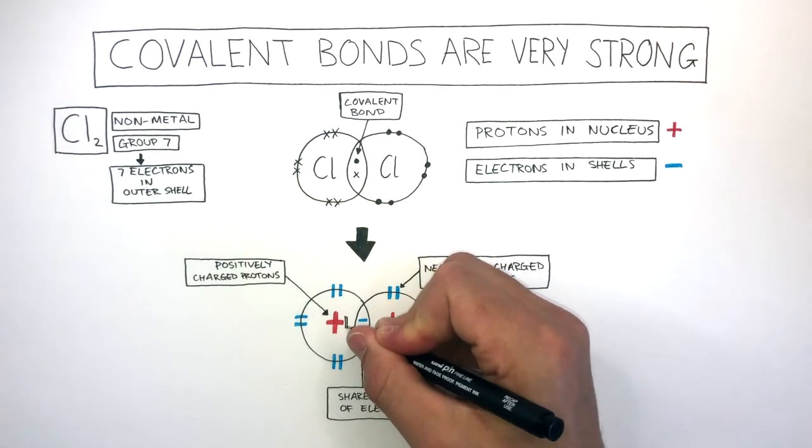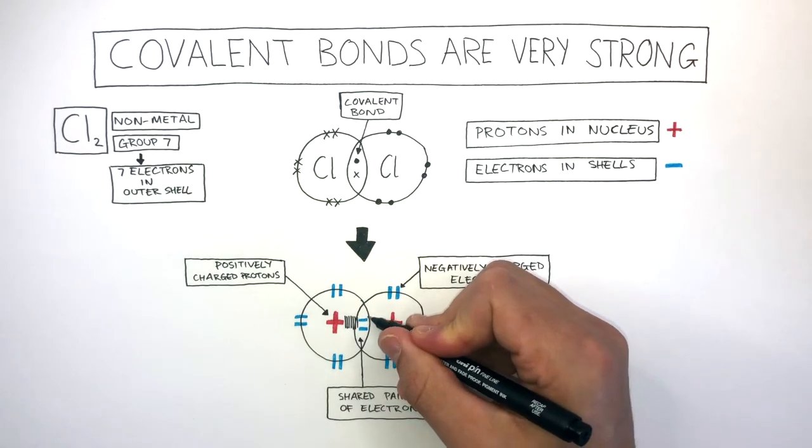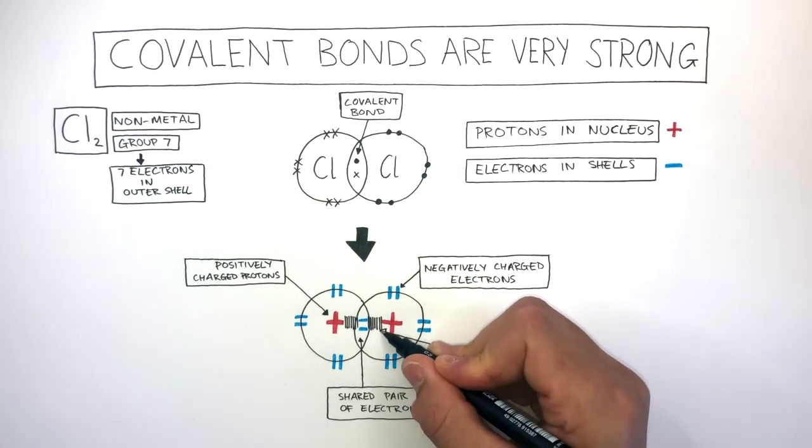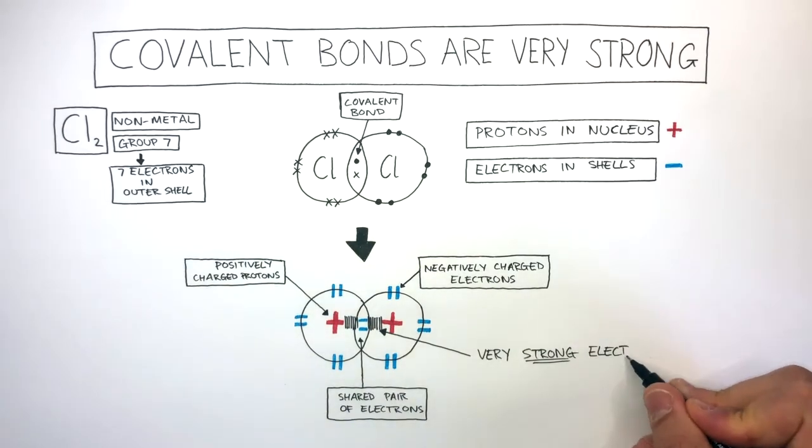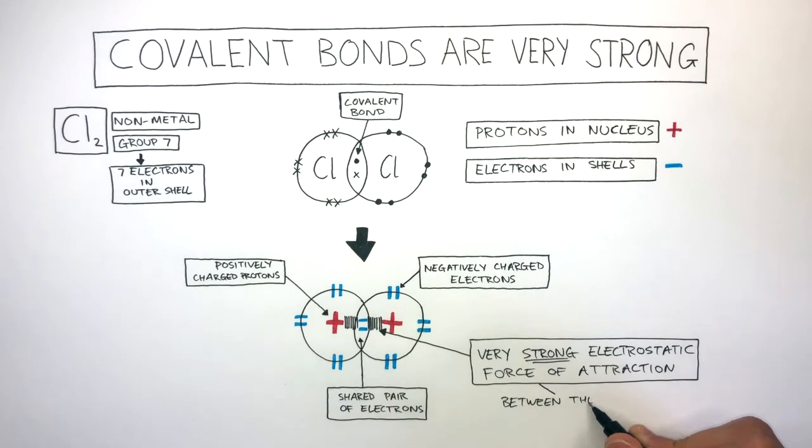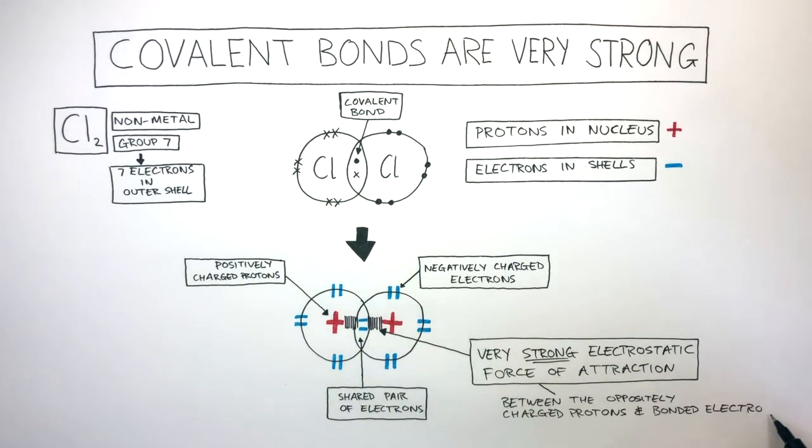Between the positive protons in the nucleus and the negatively charged bonded pair of electrons, there is a very strong electrostatic force of attraction. This is between the oppositely charged protons and bonded electrons. You may recognize this term from your understanding of an ionic bond.